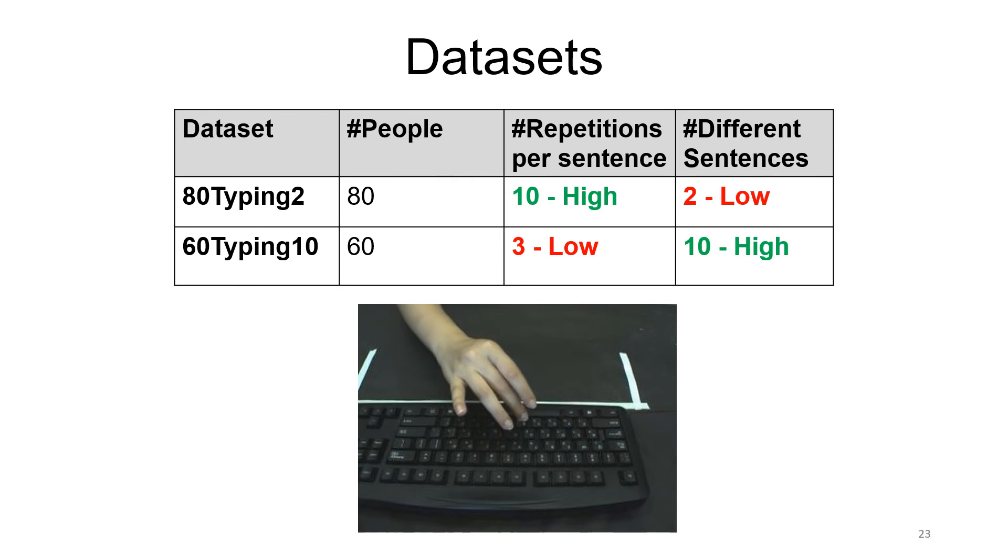Since there is no benchmark and no dataset for this task, we created two datasets. First dataset, named 80Typing2, contains 80 persons.